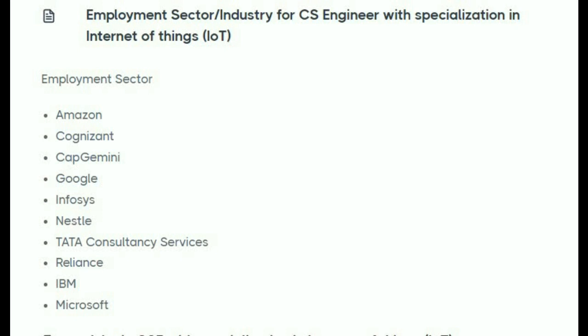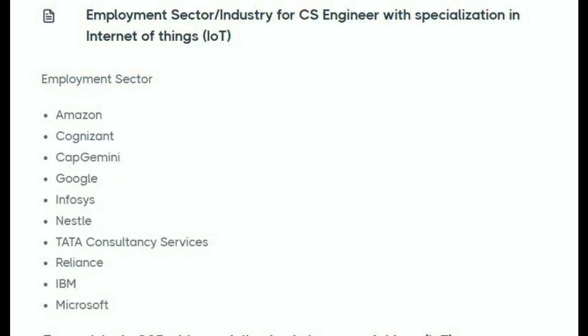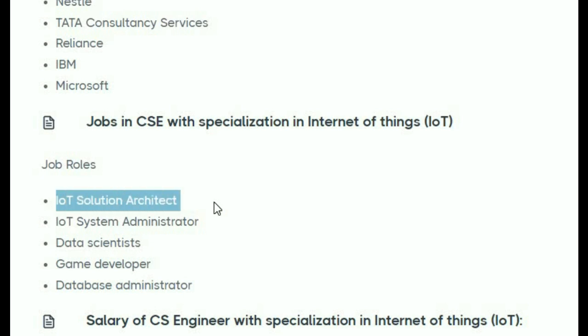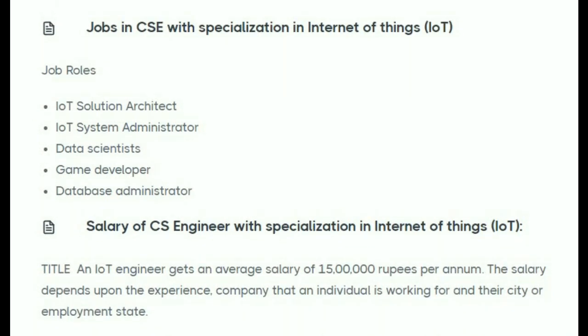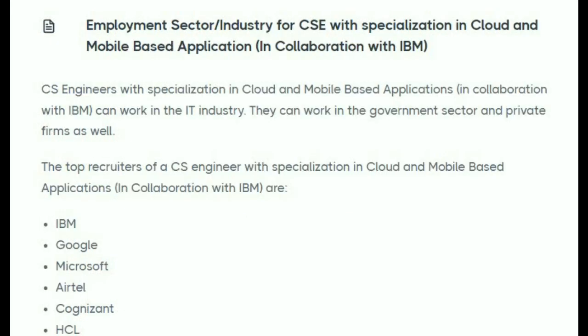The next branch is CS Engineering with Specialization in Internet of Things (IoT). IoT means Internet of Things. Job roles include IoT solution architect, system administrator, data scientist, game developer, and database administrator. The average salary per annum is 15 lakhs, which increases with experience and skill set.